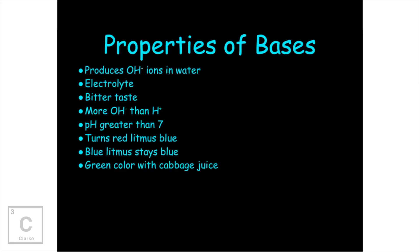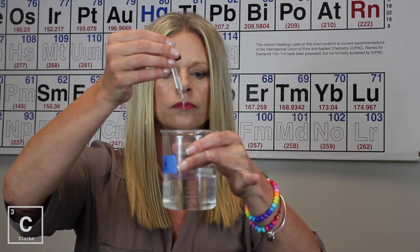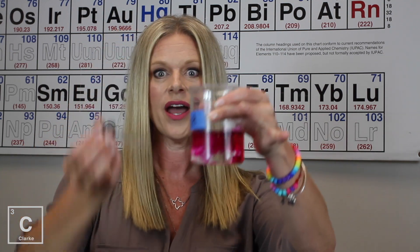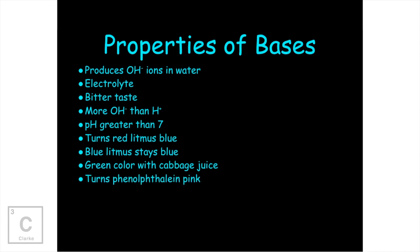That cabbage juice that I talked about earlier, if we use that as a natural indicator in a base, it's going to turn green. I wish I had some of that to show you. Phenolphthalein is an indicator for bases. So when we put that in our hydrochloric acid a while ago, it didn't do anything. But let's see what happens when it does come in contact with a base. Okay, that is definitely a base. You can see that reaction. You can see that it's indicating for a base. Bases, they do not react with metal, and they also do not react with carbonates.